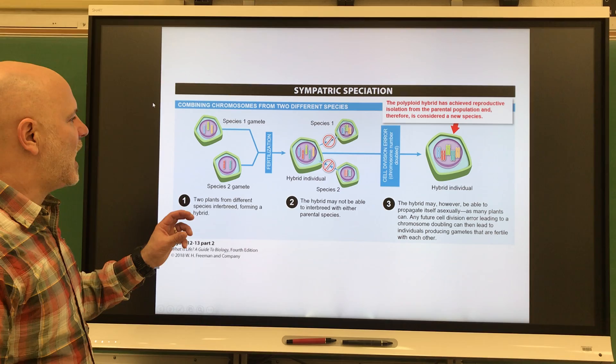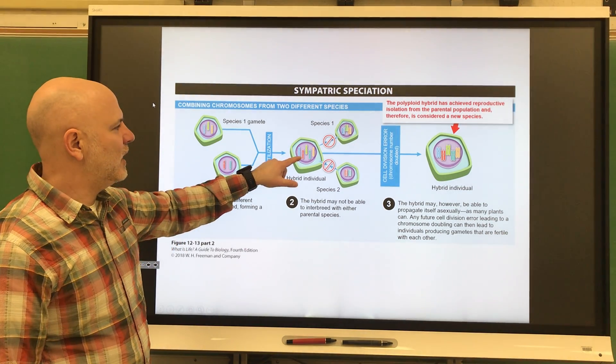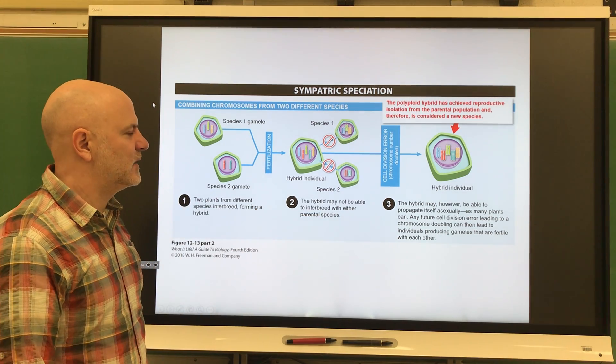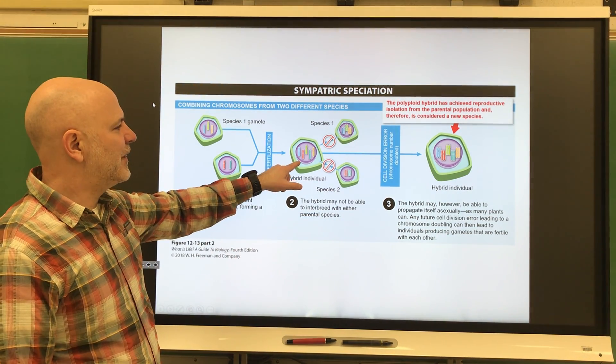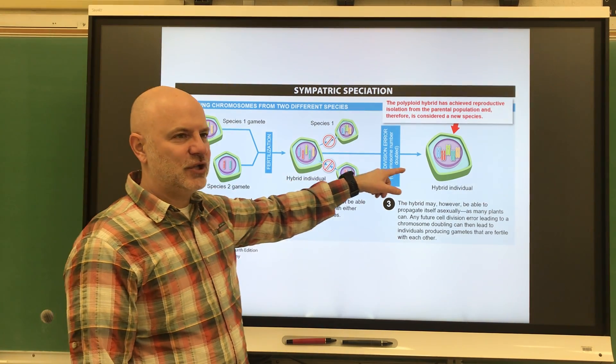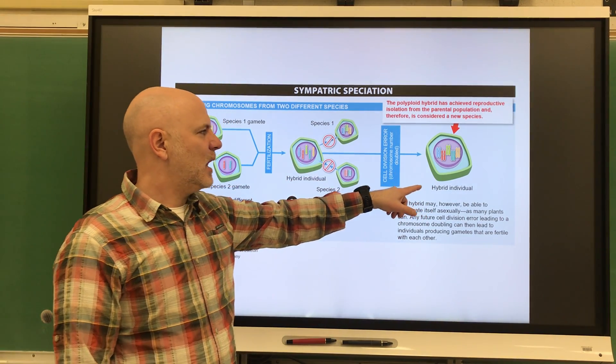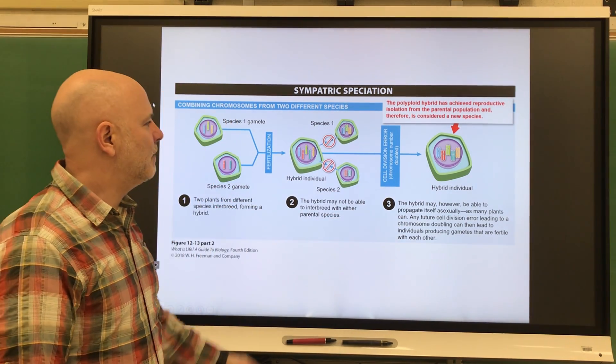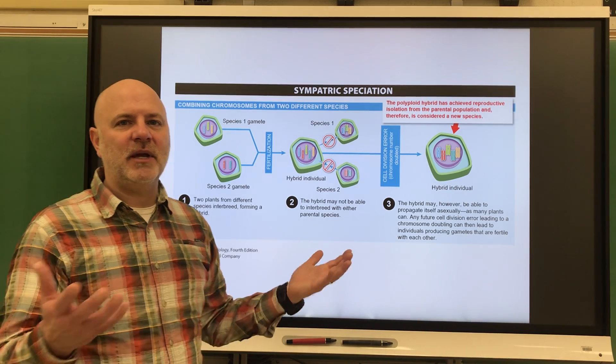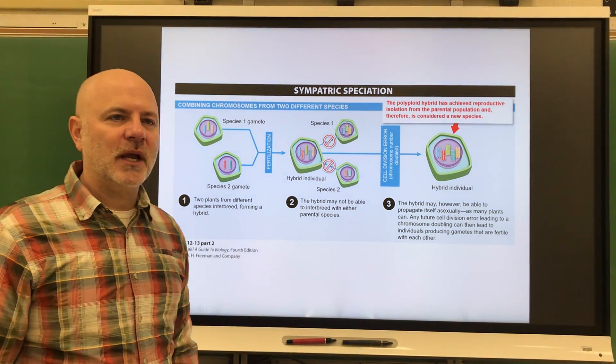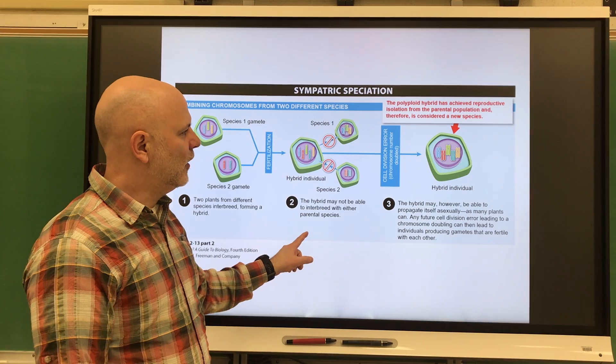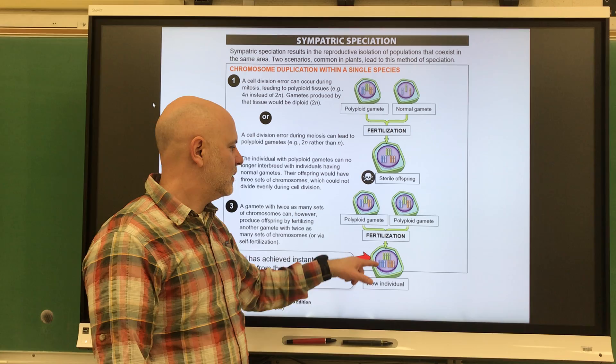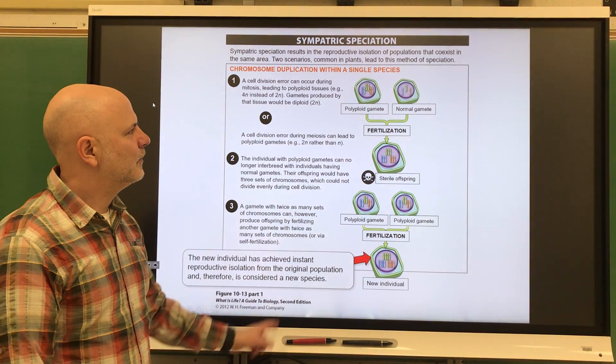Another is by hybridization. We get this hybrid individual, and it can't reproduce with either one of its parental species. But what can happen with it is that non-disjunction mutation can occur where it becomes polyploid again. Then that hybrid individual can produce gametes, and those gametes can come together and produce that offspring. Polyploid gamete, polyploid gamete, making that new individual.